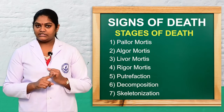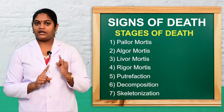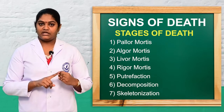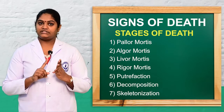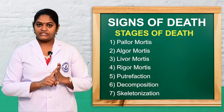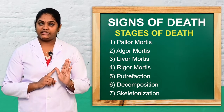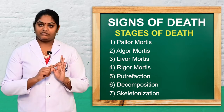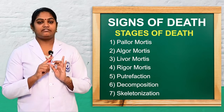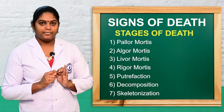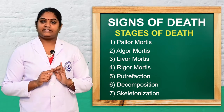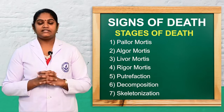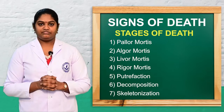To recap, the seven stages of death are: first, pallor mortis; second, algor mortis; third, livor mortis; fourth, rigor mortis; fifth, putrefaction; sixth, decomposition; and seventh, skeletonization.